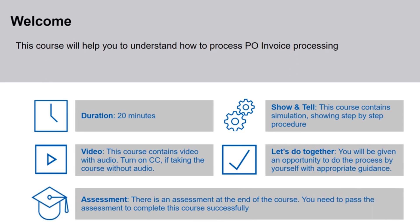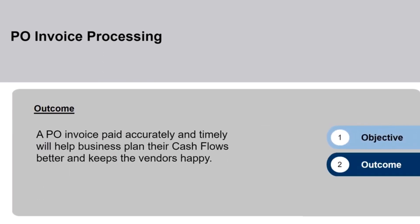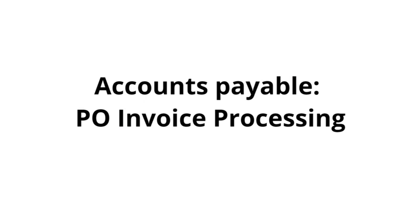You need to pass the assessment to complete the course successfully. A PO is generated when the customer places the order, while an invoice is generated after the order is complete. A PO details the contract of the sale, while an invoice confirms the sale. This is an important activity in accounts payable. A PO invoice paid accurately and timely will help business plan their cash flows better and keeps the vendors happy. Accounts payable, PO invoice processing.